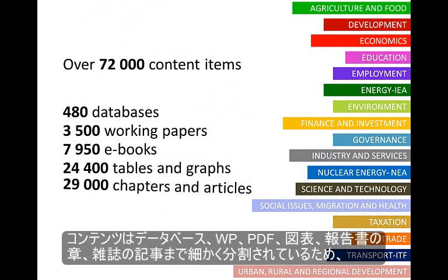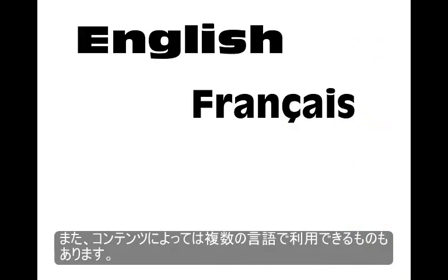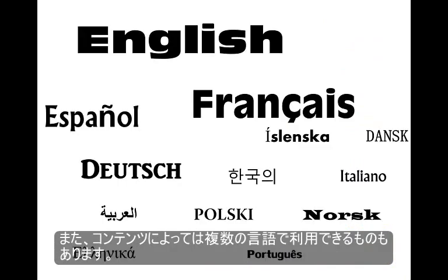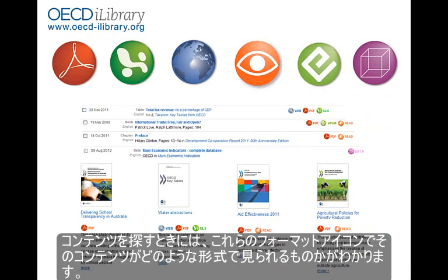Content is also available as tables and graphs, and chapters and articles, making it easy to discover content. If available, content can be accessed in various languages. While exploring content, look for these format symbols to see how information can be viewed.